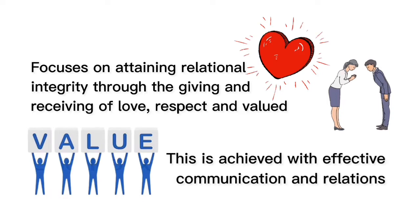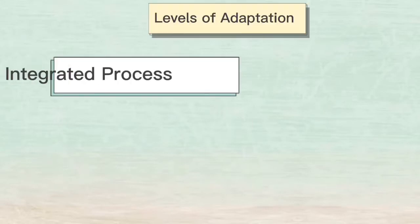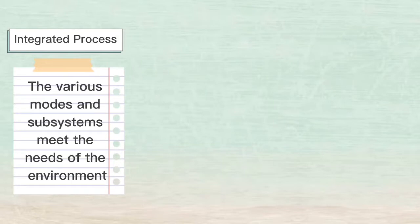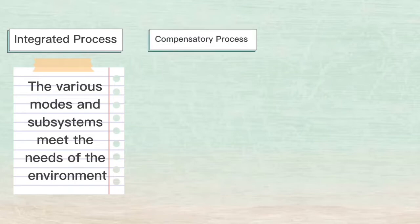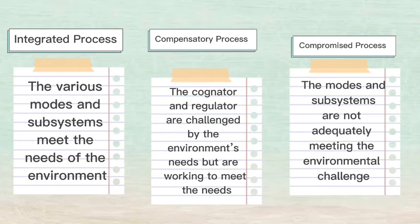Interdependence is achieved through effective communication and relations. There are three levels of adaptation: integrated, compensatory, and compromise process. In the integrated process, the various modes and subsystems meet the needs of the environment — examples include stable breathing, spiritual realization, and successful relationships. In the compensatory process, the cognator and regulator are challenged by the environment's needs but are working to meet them — examples include grief and starting a new job. In the compromise process, the modes and subsystems are not adequately meeting the environmental challenge — examples include hypoxia, unresolved loss, and abusive relationships.